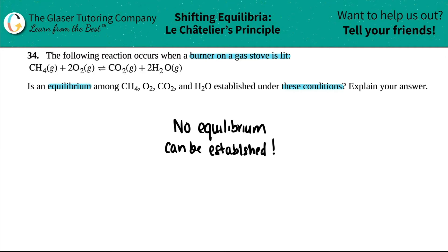This can only be established if you have closed conditions. So whether you have a vessel that is closed, you can come to equilibrium, but if you have things exposed to the outside environment, no equilibrium will be able to be established.